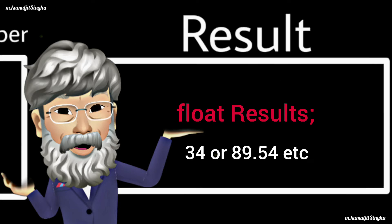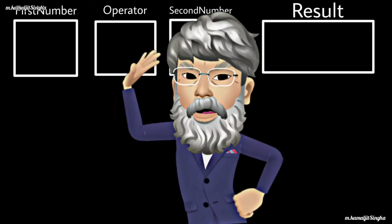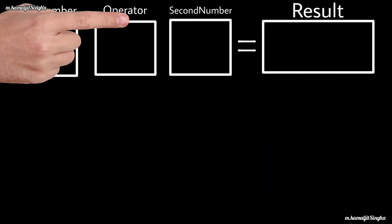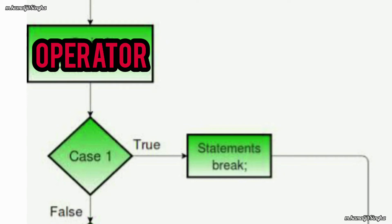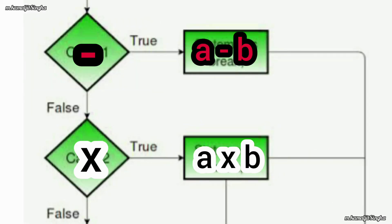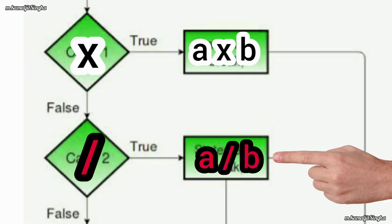The result stores an integer or float number, and the initial value is zero. But before the calculation, the operator has the decision control statement. The operator decides whether to add, subtract, multiply, or divide the two numbers. This is called a switch case statement in C programming.